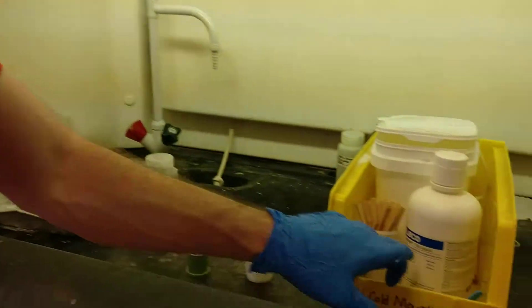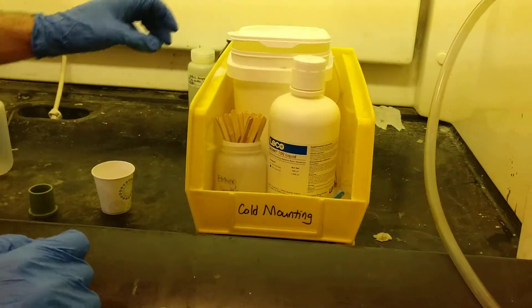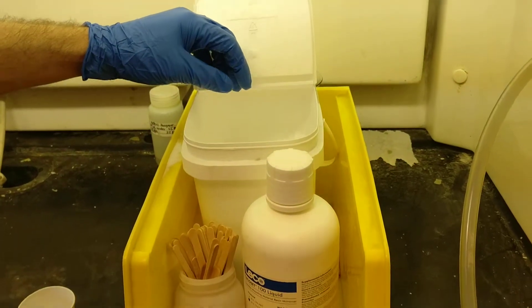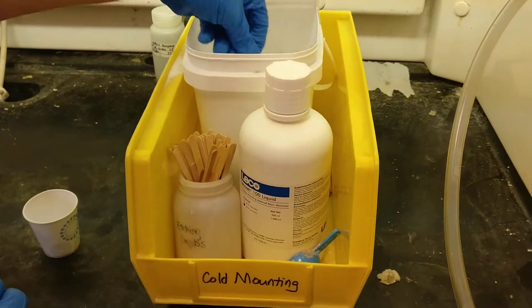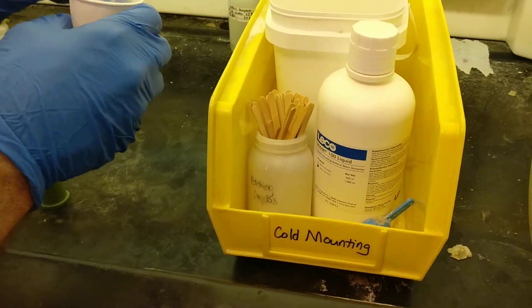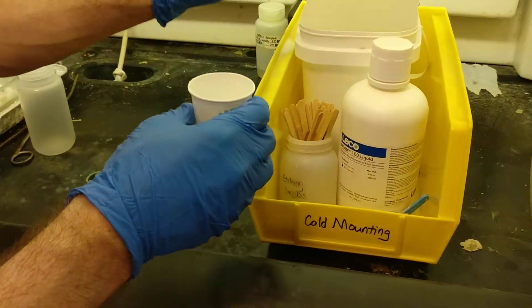So this is Lecoset 100. There's a ratio of two scoops of powder to one scoop of liquid. If I only have one sample, I can do one scoop of powder and half a scoop of liquid. So put that right into the wax cup.